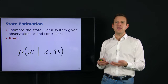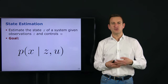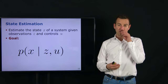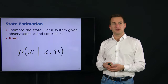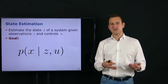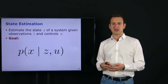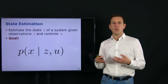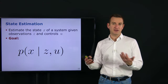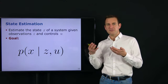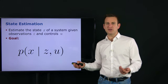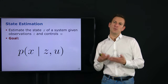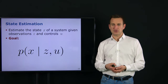In probabilistic state estimation, we are concerned with estimating the probability distribution of where the platform is — our state — given our observations and control commands. We use U for the control command, Z for the observation, and X for the state to estimate. Often it boils down to estimating this probability distribution, or it could mean estimating just the most likely state. Given the probabilistic framework and the uncertainty we have about our pose estimate, we often look at estimating the full probability distribution, which could be Gaussian or a different type of representation.